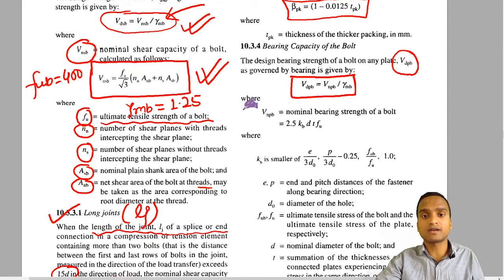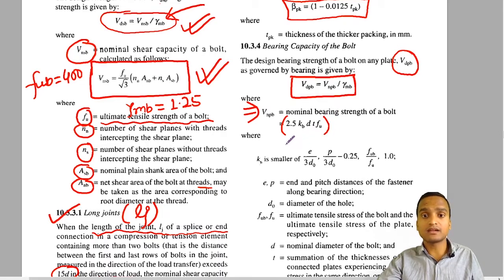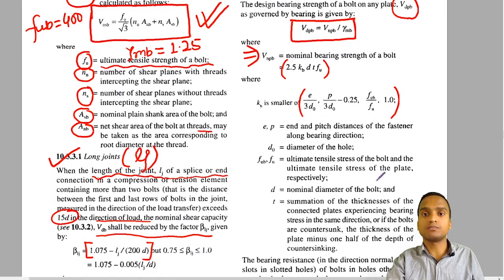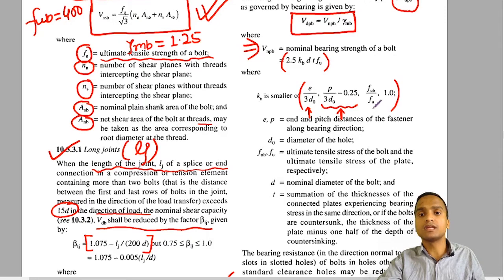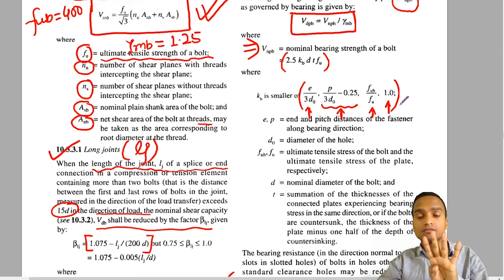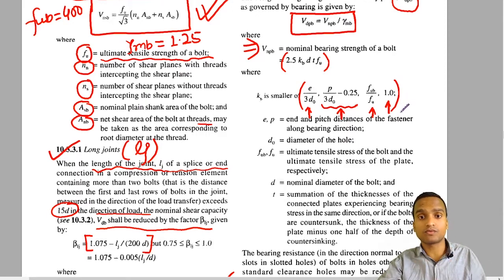The nominal bearing strength of bolt Vnpb is given by: Vnpb = 2.5 × Kb × d × t × fu. Here Kb is the smallest of four values: (1) e / (3d₀), (2) p / (3d₀) − 0.25, (3) fub / fu, and (4) 1. You calculate all four values and choose the minimum as Kb.